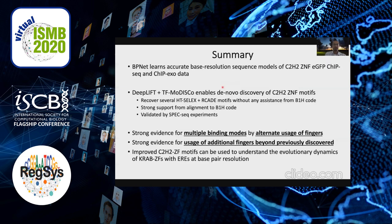To summarize what we've been doing: we learned base-resolution models of zinc finger transcription factors using ChIP-seq and ChIP-exo, and interpreting these models gives us transcription factor motifs. We find strong evidence for multiple binding modes with alternate use of zinc fingers, and these improved zinc finger motif models are helping us uncover evolutionary dynamics of KRAB zinc fingers with endogenous retroelements.